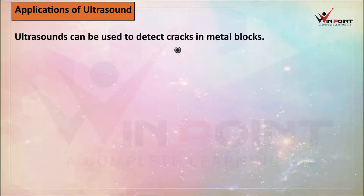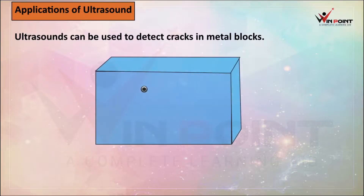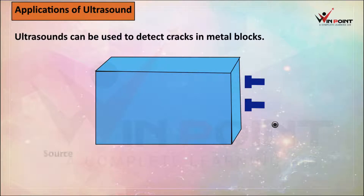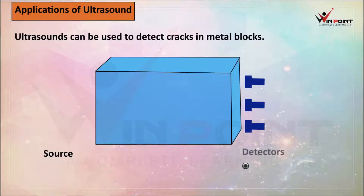Ultrasound can be used to detect cracks in metal blocks. If there is a metallic block and we want to find the cracks in it, we use ultrasonic sound. For that, we place some detectors which will detect ultrasonic sound. From the source, we transmit ultrasonic sound.